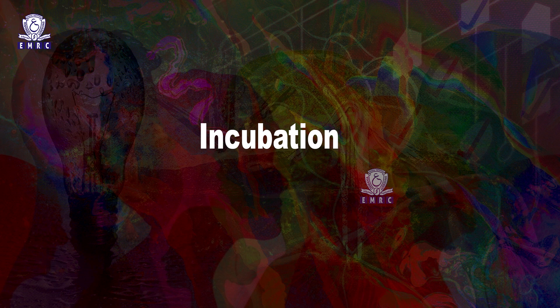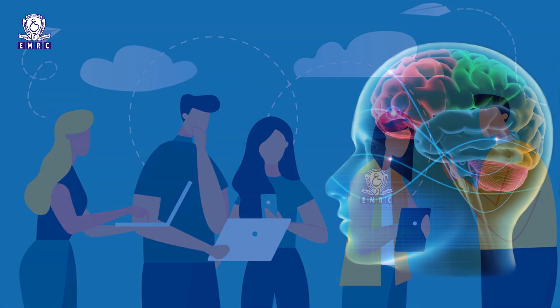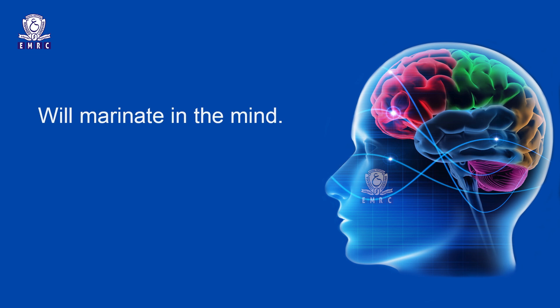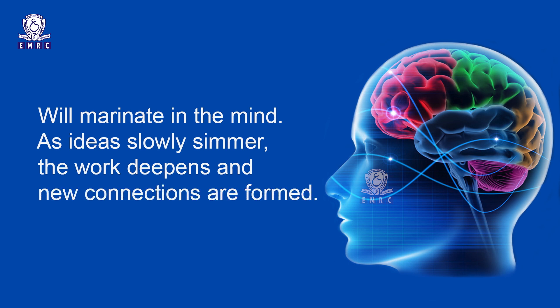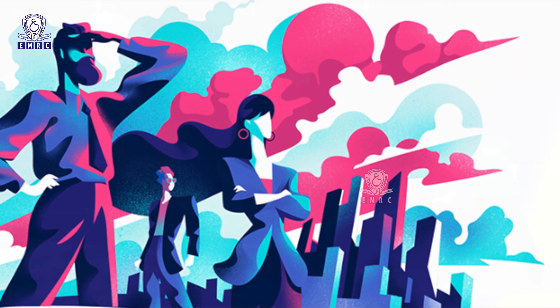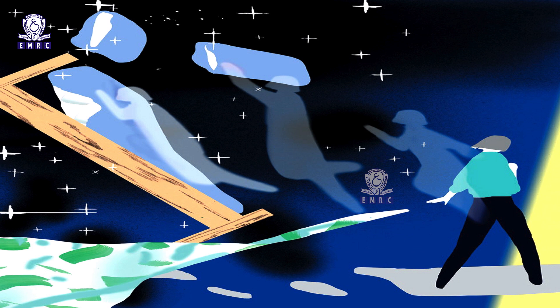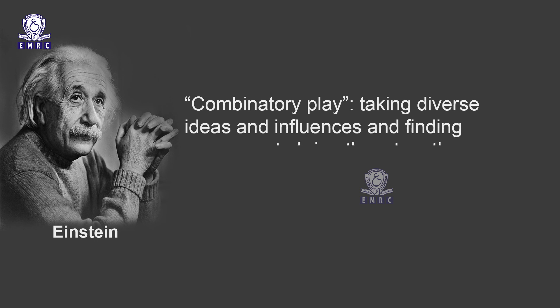Stage 2 is Incubation: in this stage, the solution exists but is not yet clear. The ideas and information gathered in Stage 1 marinate in the mind. As ideas slowly simmer, the work deepens and new connections are formed. During this period of germination, the artist takes their focus off the problem and allows the mind to rest. While the conscious mind wanders, the unconscious engages in what Einstein called Combinatory Play — taking diverse ideas and influences and finding new ways to bring them together.